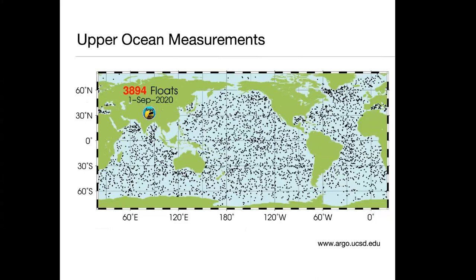For the upper ocean — roughly defined as the layer above 2000 meters — we have, at least in the past few decades, pretty good observations, thanks to the development of the global Argo array. Here is the latest map showing the spatial distribution of the Argo floats around the globe. The coverage is pretty good and the distribution is quite nice. From those Argo floats, you can get a lot of data for the upper 2000 meters continuously and around the global ocean. Because of the amount of data, the confidence about the upper 2000 meters is relatively good.